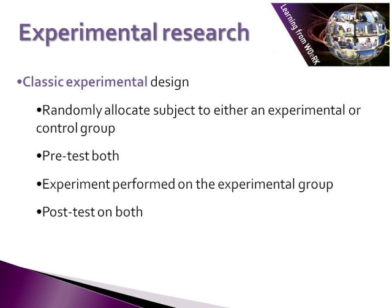With a classical experimental approach, it is just as you imagine in science class, with a random allocation of each subject to either one of two groups — either a control group where no experiment is performed, and an experimental group. Each group is pre-tested, then the experiment is performed on the experimental group. A post-test is completed on both groups, and the results are examined to establish cause and effect. An easy example is drug trials, using two groups where a drug is given to the experimental group and a placebo is given to the control group, and the results are analysed to understand the effects of the drug.